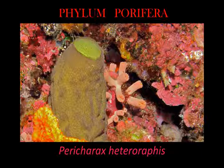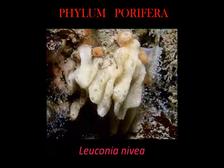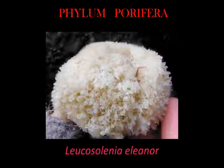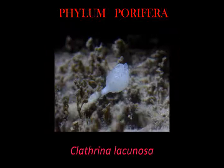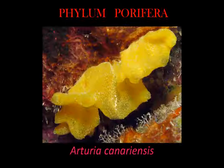Calcarea examples include Clathrina clathrus, Leuconia nivea, Leucosolenia eleanor, Leucosolenia variabilis, Clathrina lacunosa, Clathrina darwini, and Arturia canariensis.